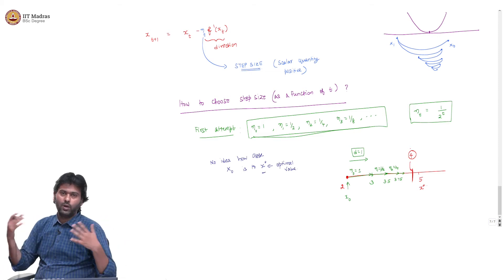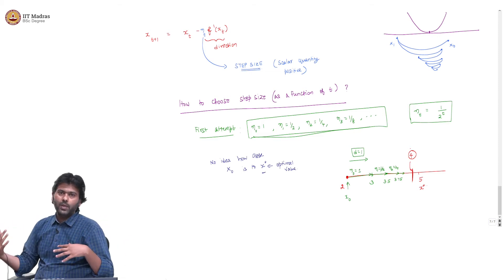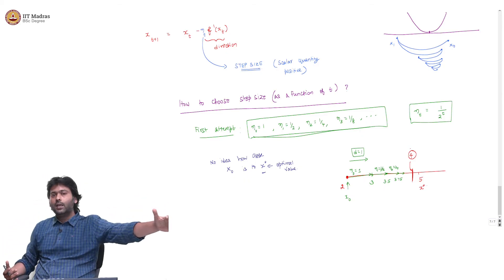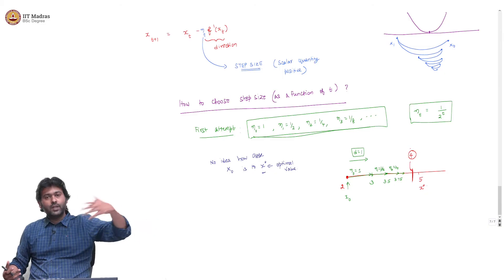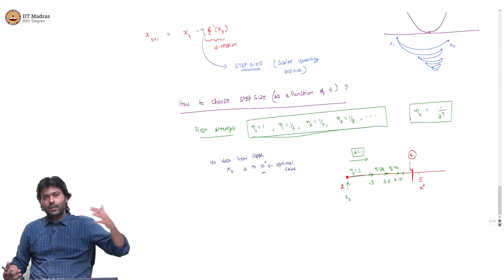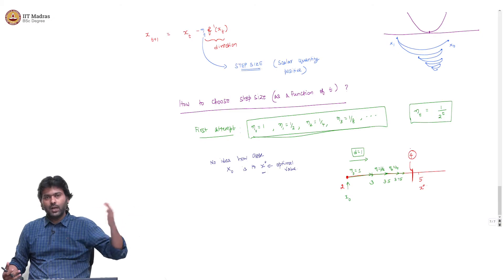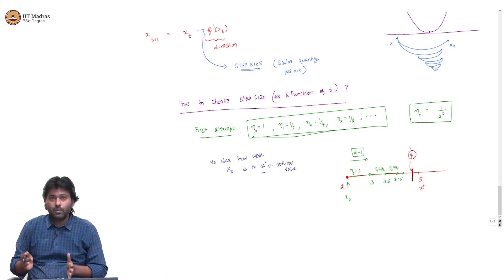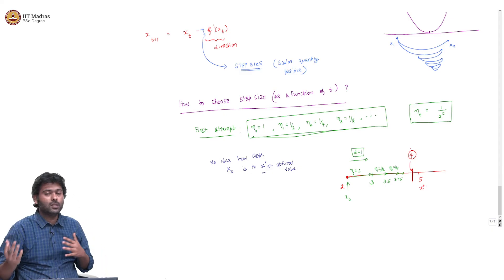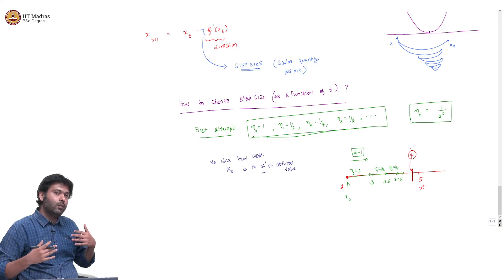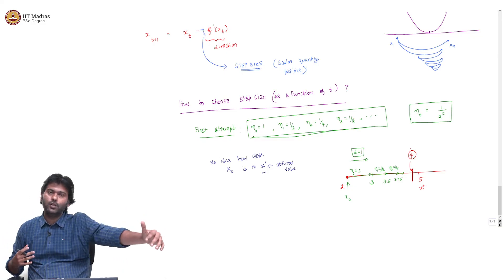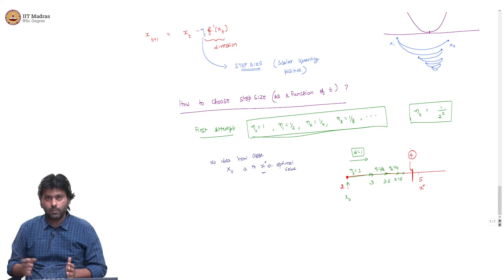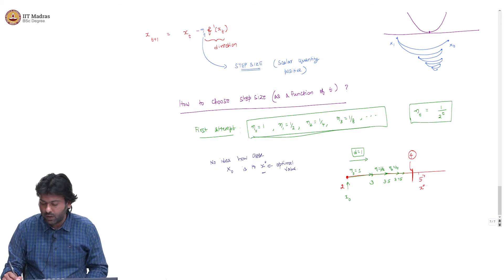This is the opposite problem of what we had earlier. The earlier problem was that without step sizes, you might take too large steps in the direction of the negative derivative, leading to oscillations. Now we introduced a step size, but if you are not careful about choosing the sequence, it might result in the opposite problem: your directions are correct, but you are not eventually reaching the minimum because your steps are too small.